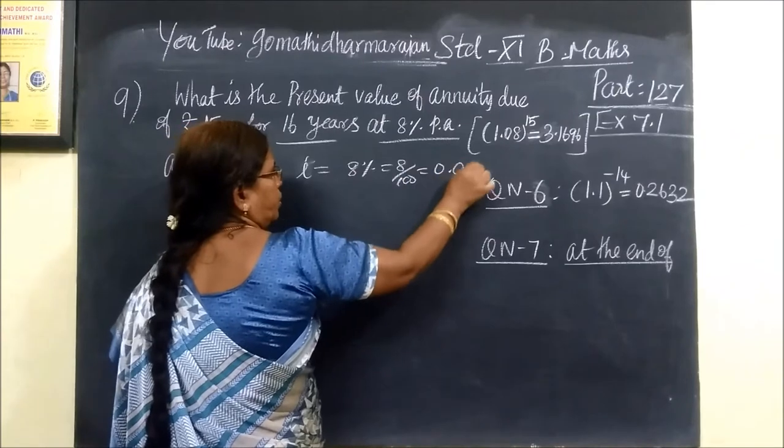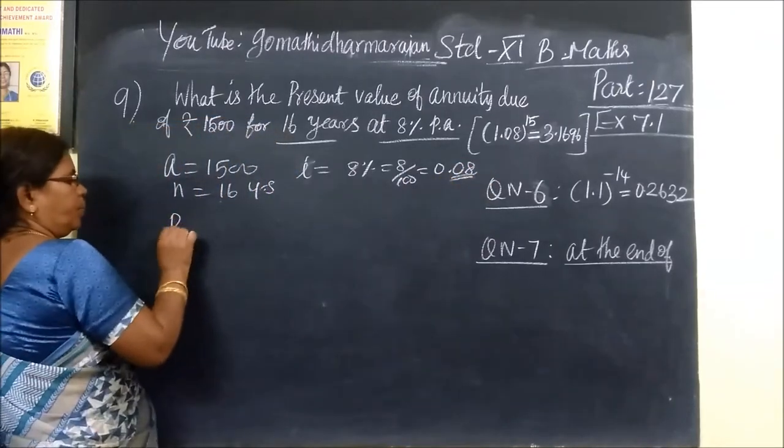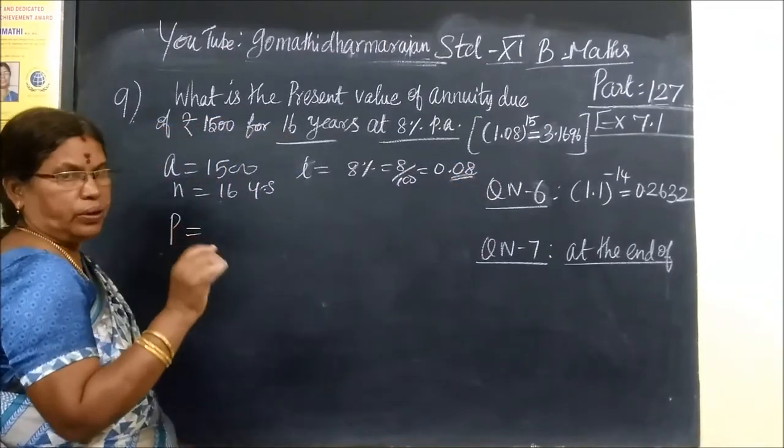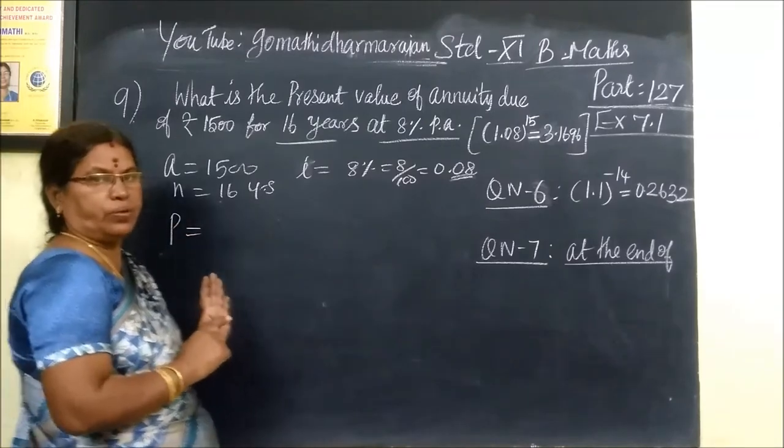So 0.08 is equal to 0.08. The present value is the present value of the annuity of Rs.1500.